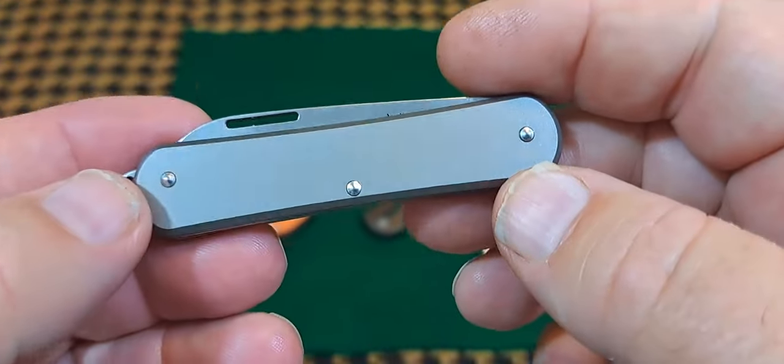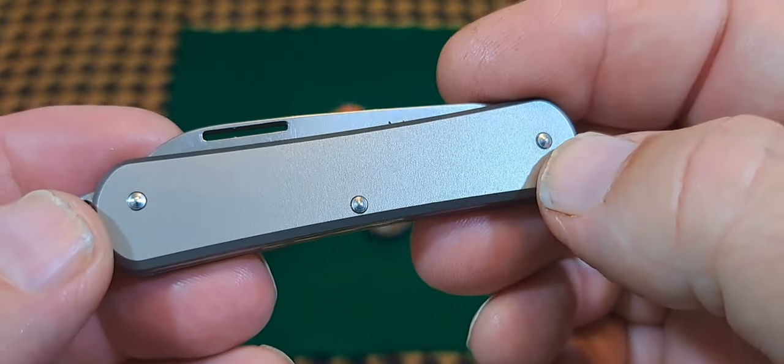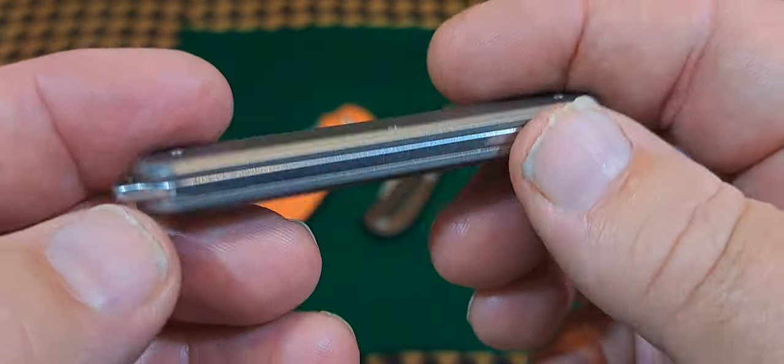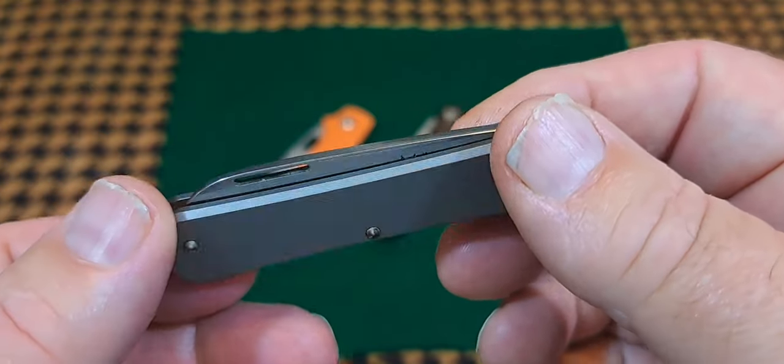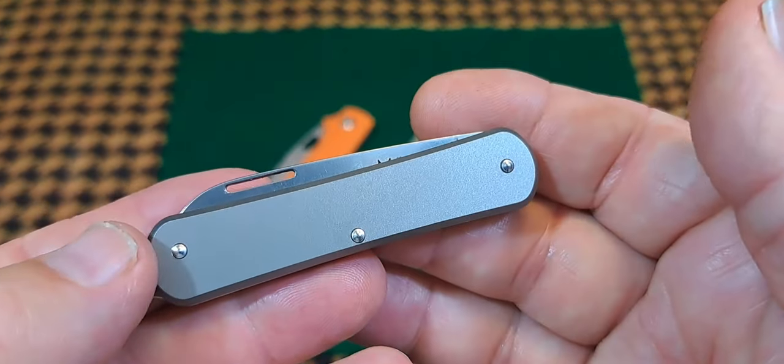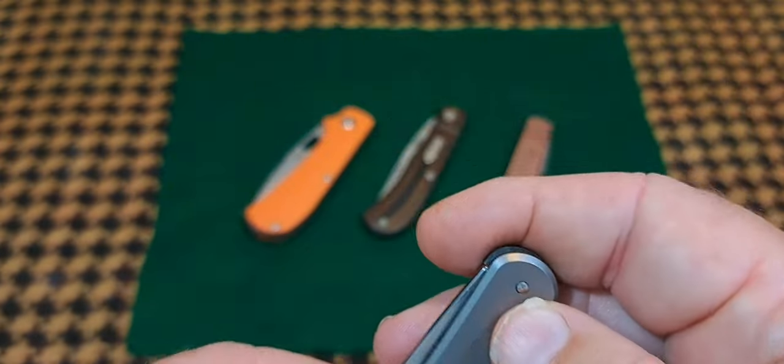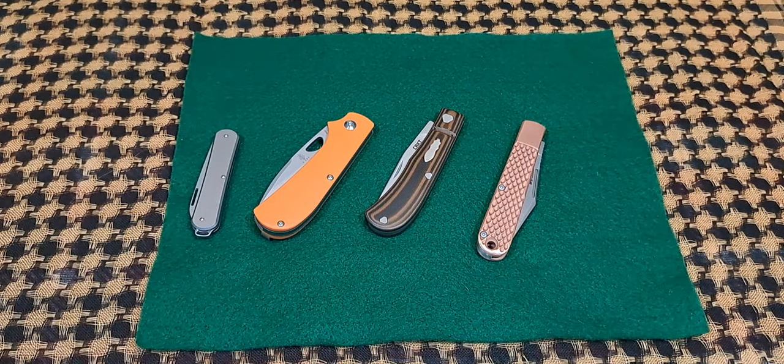If you look at this, it is a true slip joint knife with a back spring. The problem is, if you look at the pins, they're traditional pins, so you can't disassemble this knife. Do you consider this a modern slip joint knife because you can't disassemble it?